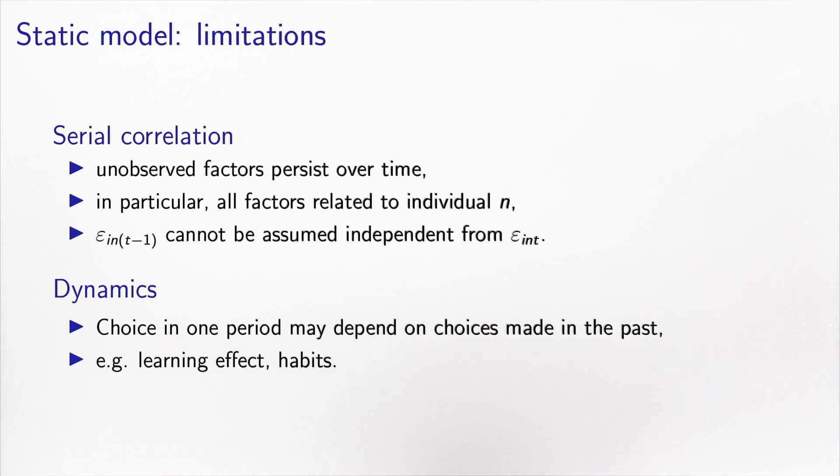The second thing is that we completely ignore the dynamics of the system. In particular, whenever I perform choices, I learn something. Also, I have some habits. If I used to travel by public transportation every morning, it's not that I wake up every morning and make a choice, calculate the cost, calculate the travel time. No, I have some habits. I prefer things just because I used to prefer them. If you don't take this into account, the history of the choices, you may miss something. These are the two major limitations of this static model: we ignore serial correlation and we ignore the dynamics. We will have to address these two limitations.